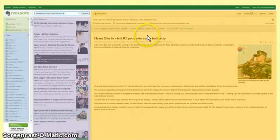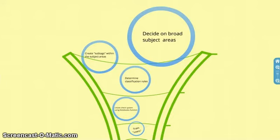Here is a simplified visual of how I created this folksonomy. I started with a decision on broad subject areas — and even though tags versus sub-tags aren't formally recognized, I created broad areas and subtags within them to provide a framework for the language we use when deciding why information is important to add to our archive. From there I determined the classification rules and then created the checking system to keep the folksonomy clean.